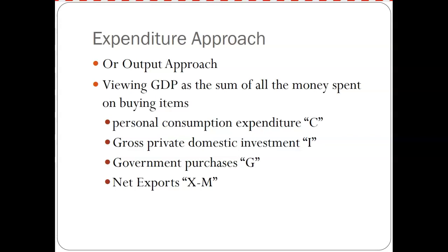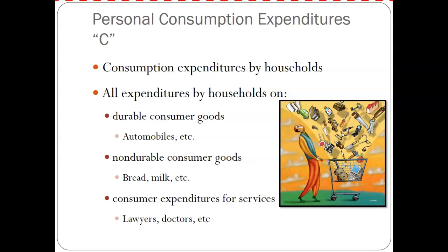So who spends money? Households spend money, giving us personal consumption expenditure, or C. Gross private domestic investments — which is business investment — is I. Government purchases or government expenditures is G. And net exports is exports minus imports, or X minus M. For personal consumption, where do people spend their money? Durable goods, non-durable goods, and services — those are the three areas.